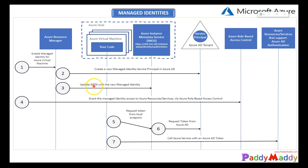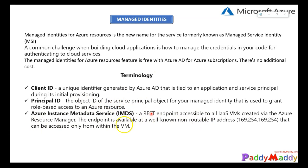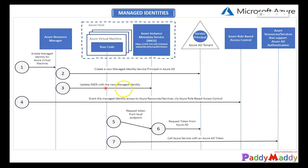The third step is that it actually updates the configuration. Since we created a virtual machine and tied this managed identity to it, in the backend IMDS — the Azure Instance Metadata Service — is used on the IP 169.254.169.254 within that VM. The fourth step is granting the identity access to resources via Azure AD role-based access. It checks whether you have the required permissions, then requests a token from the local endpoint. That token goes to Azure AD, gets validated, and comes back as an access token for the Azure service.